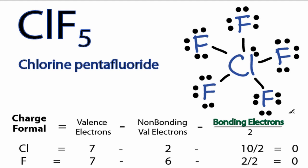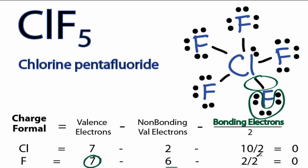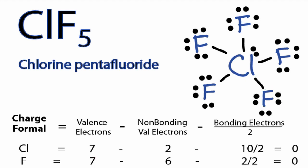For fluorine, they're all symmetrical so we only need to do one. On the periodic table it's in group 7 or 17, so it has 7 valence electrons. We have 6 non-bonding electrons, and our bond here is 2, which we'll divide by 2. So 7 minus 6 minus 1 is 0. Our formal charges are 0 for each atom in ClF5. We've used all 42 valence electrons we started with, so that makes this the best structure for ClF5. This is Dr. B — thanks for watching.